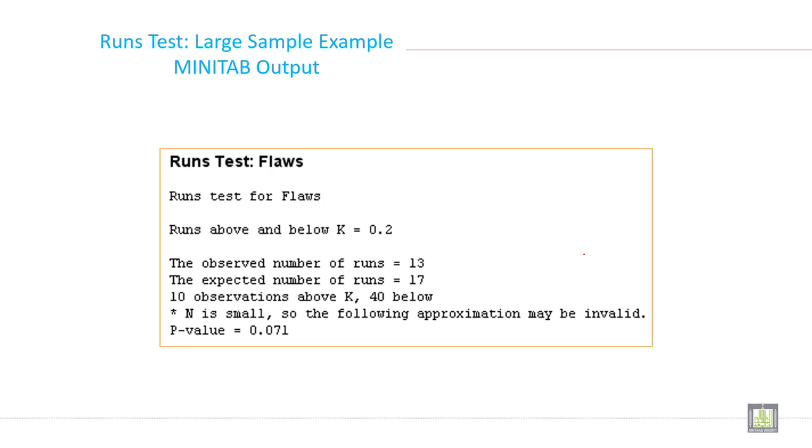Minitab output calculated from computer. Run test for flaws: run above and below K equals 0.2. The observed number of runs is 13 while the expected number of runs is 17.